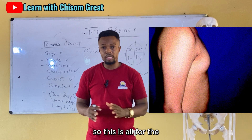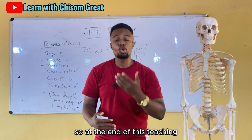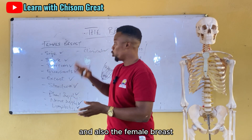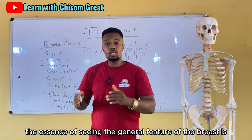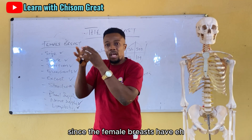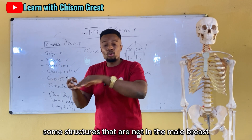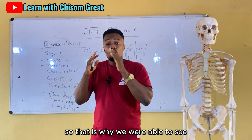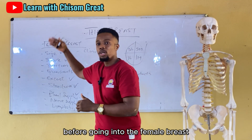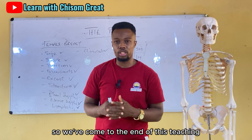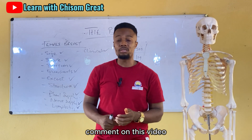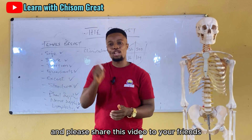In summary, we have covered the general features of the breast and the female breast in detail — including its size, shape, function, quadrants, extent, structures, blood supply, nerve supply, lymphatic drainage, and clinical conditions. We started with the general features before moving to the female breast because the female breast has structures not found in the male. Thank you for watching — please like, comment, and share this video.